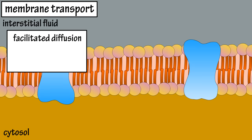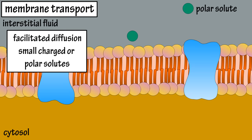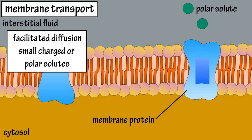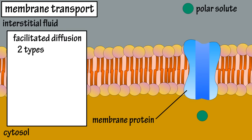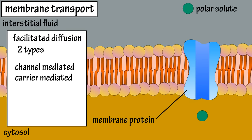The second type of diffusion is facilitated diffusion. This applies to solutes that are small and either charged or polar. Because these solutes are polar, the non-polar phospholipid bilayer blocks them from passing through the membrane by simple diffusion. However, they can pass into and out of the cell with the assistance of plasma membrane proteins. There are two types of facilitated diffusion: channel-mediated diffusion and carrier-mediated diffusion.